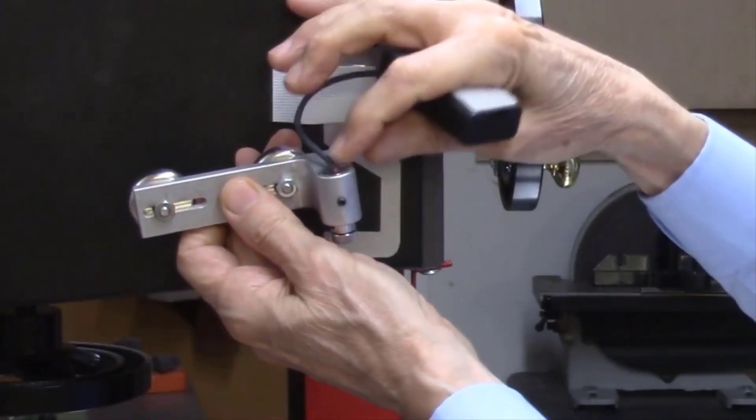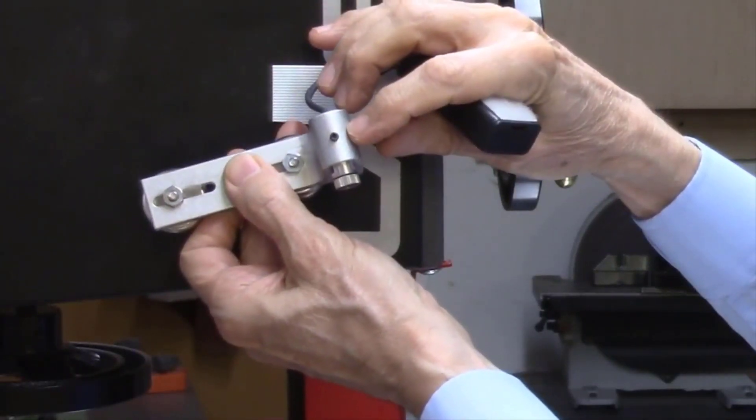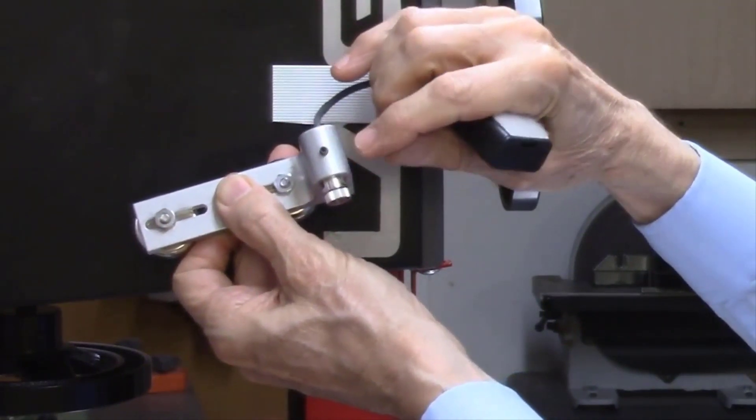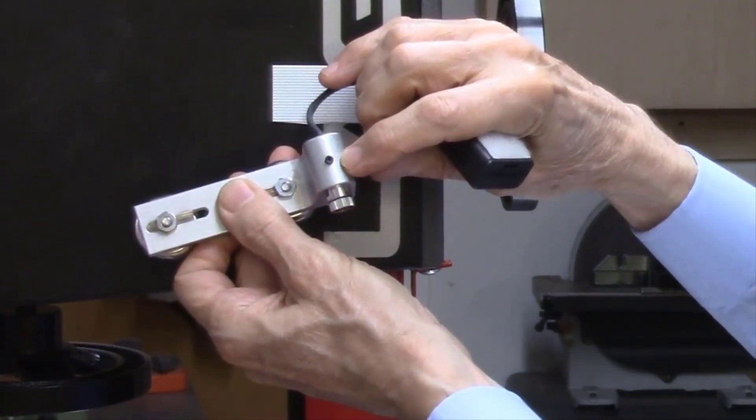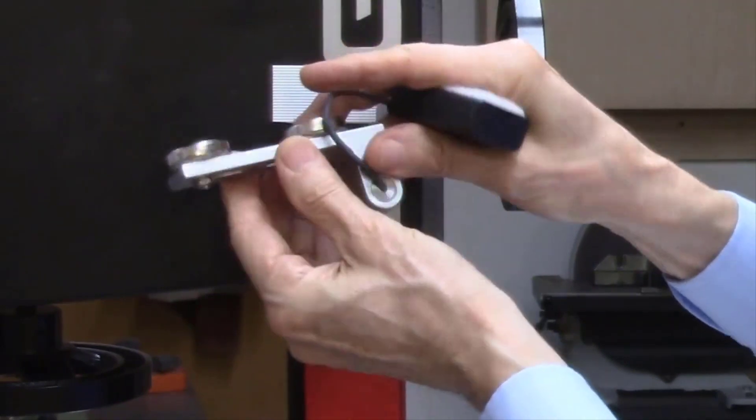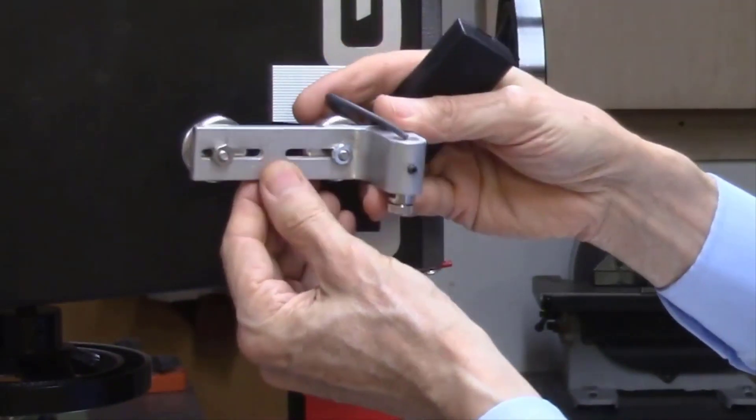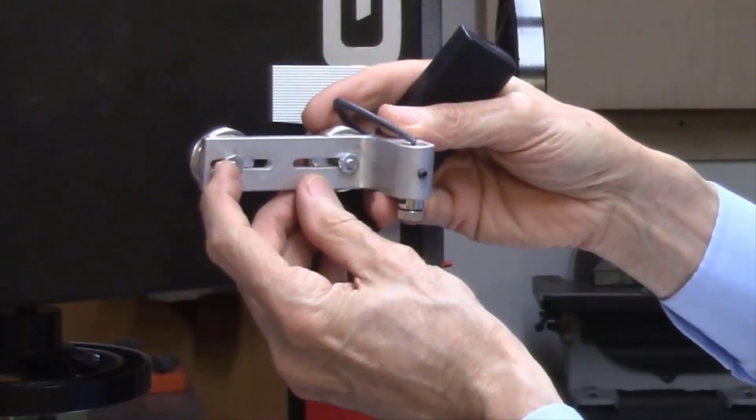If not already done so, attach the laser cylinder into this offset aluminum bracket and lightly tighten with a small set screw. The magnets are attached to the bracket with screws and nuts. Make sure the screws and nuts holding the magnet are tight before proceeding.